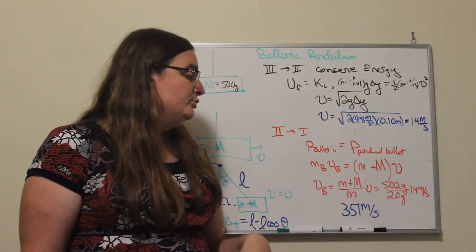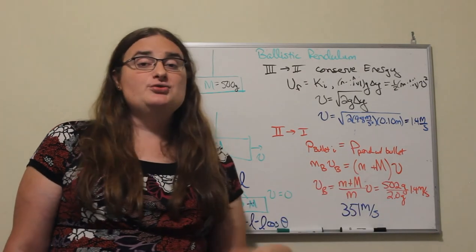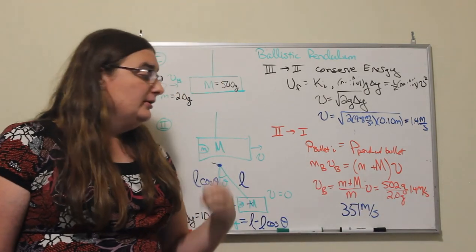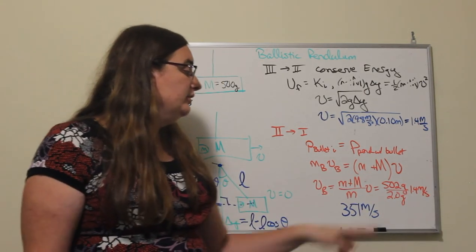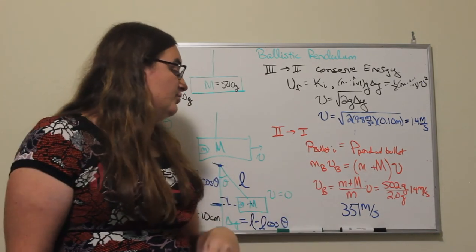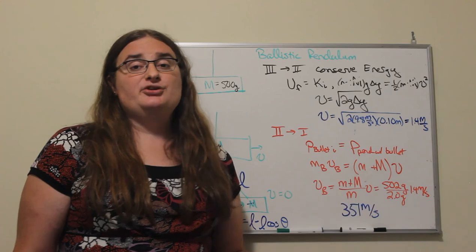So I have 502 grams divided by the 2 gram mass of the projectile times 1.4 meters per second, and 1.4 times 251 gives me 351 meters per second.